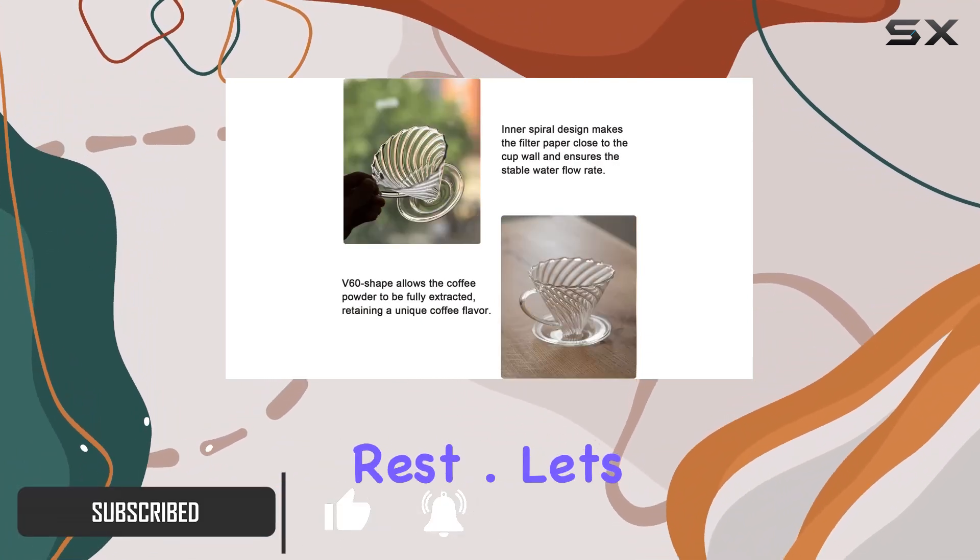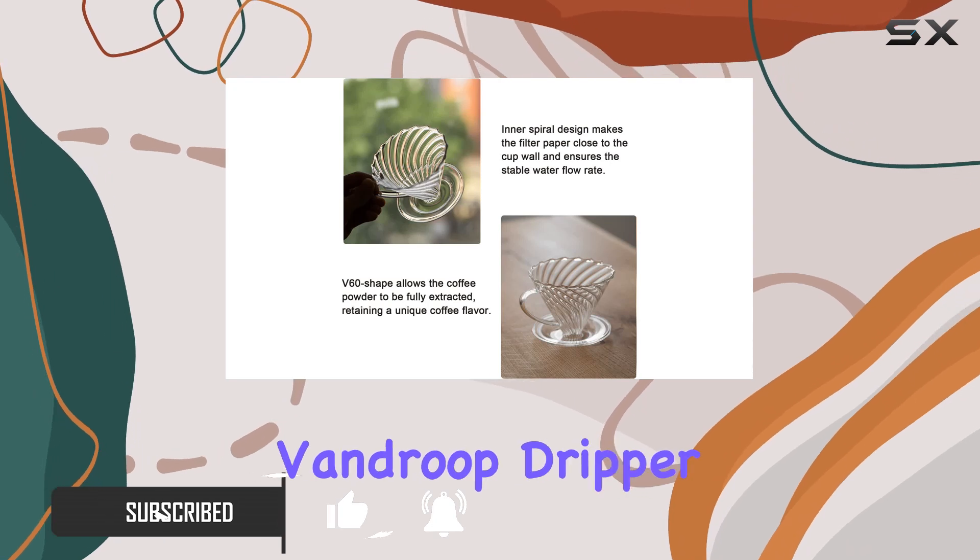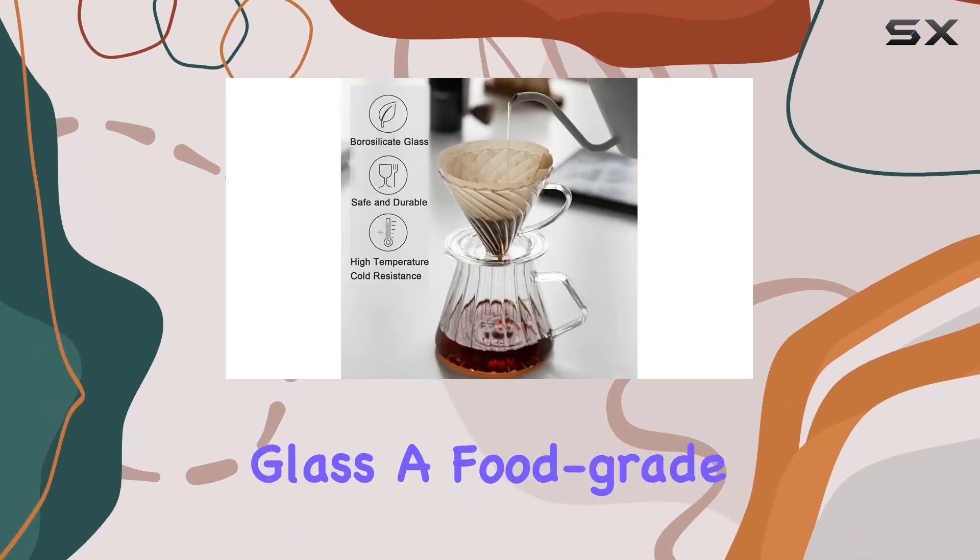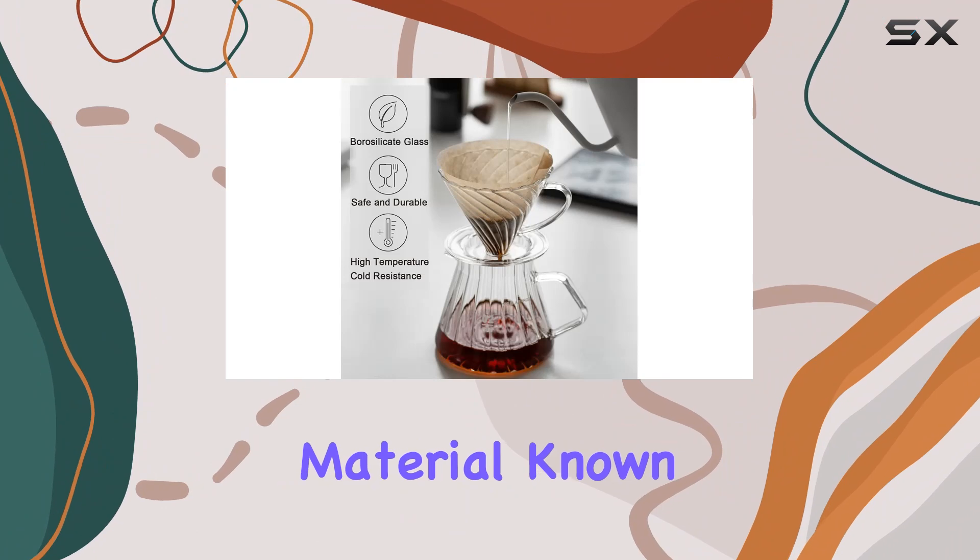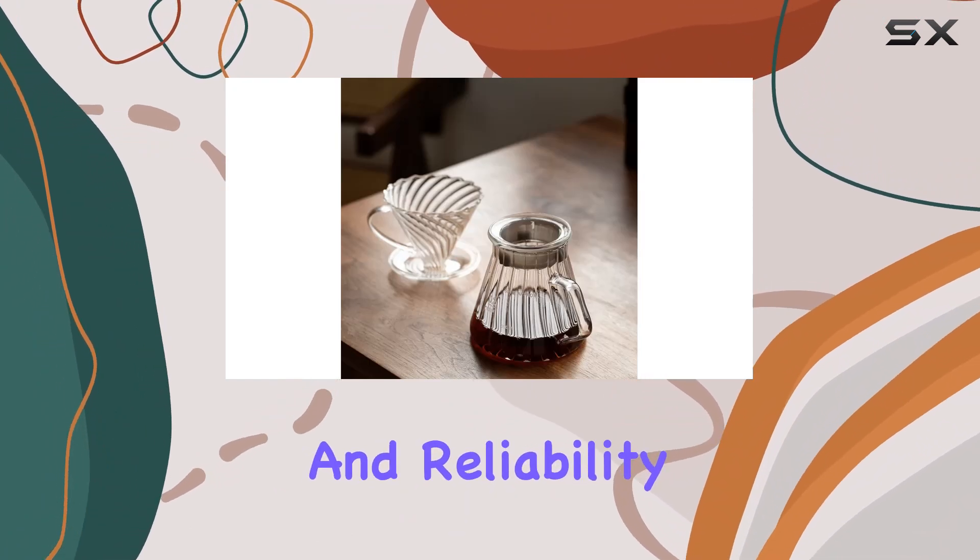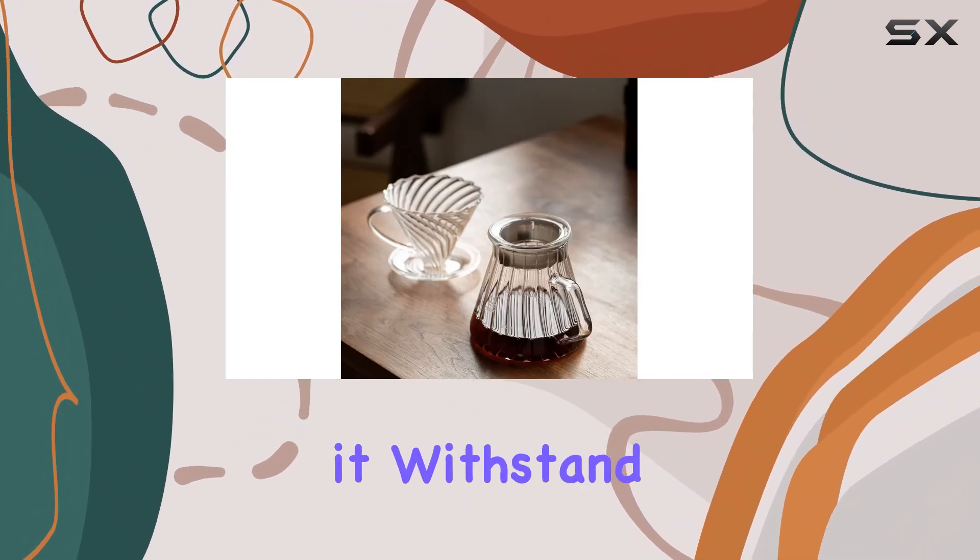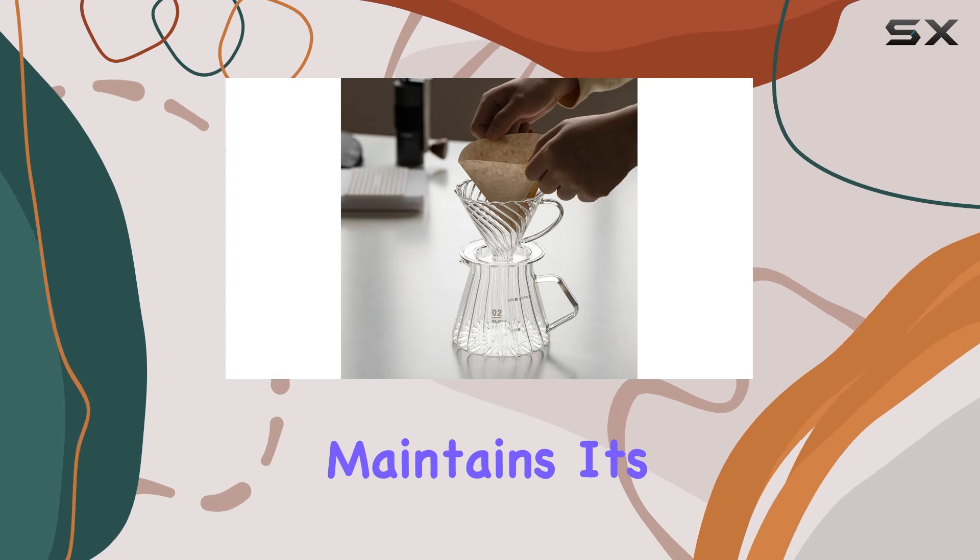Let's start with the materials. The Vandrup dripper is crafted from borosilicate glass, a food-grade material known for its durability and reliability. Not only does it withstand high temperatures, but it also maintains its integrity over time, ensuring your coffee experience remains consistent.